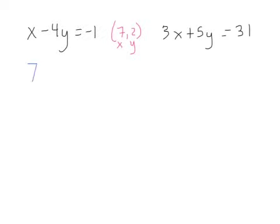So right here I have 7 minus 4 times 2 has to equal negative 1. Well, 7 minus 8 does equal negative 1, and so it worked in that equation, didn't it?